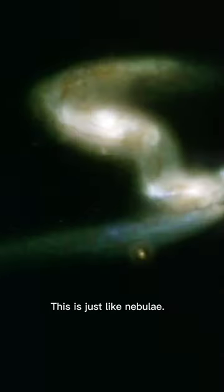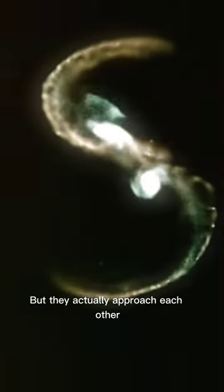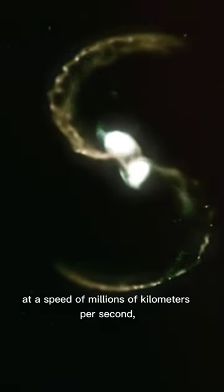This is just like nebulae. The two colliding galaxies always appear to be the same shape and very close, but they actually approach each other at a speed of millions of kilometers per second and have trillions of kilometers between them.